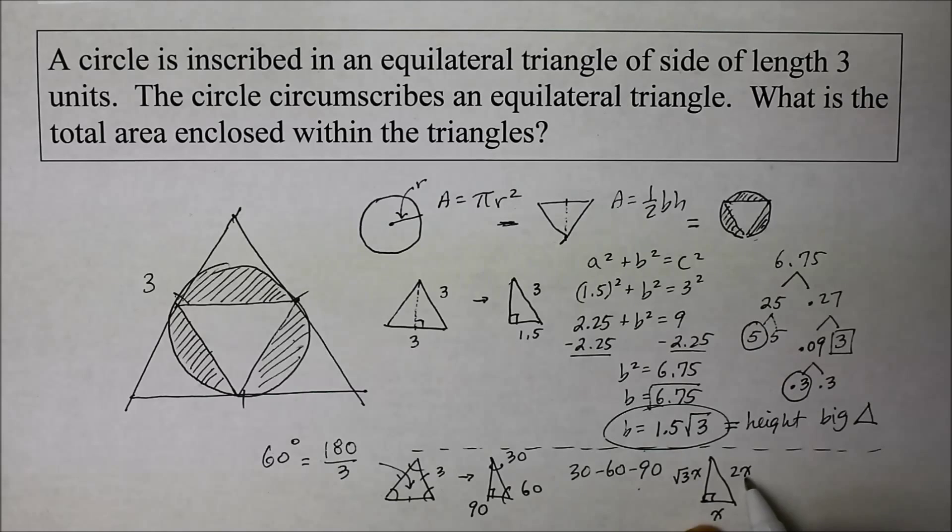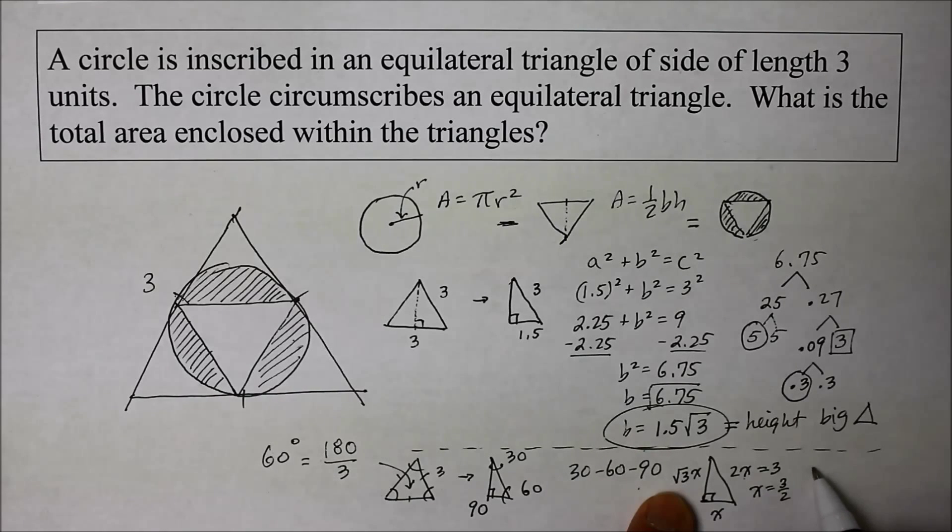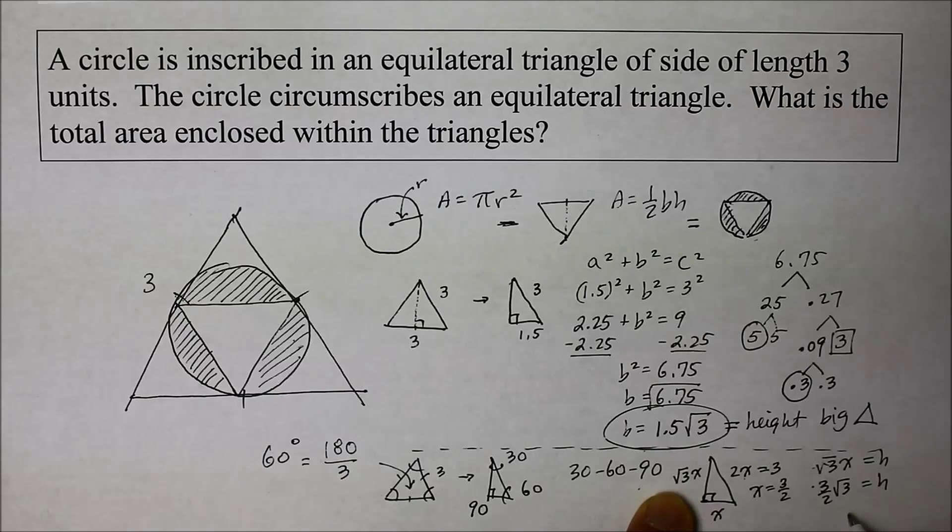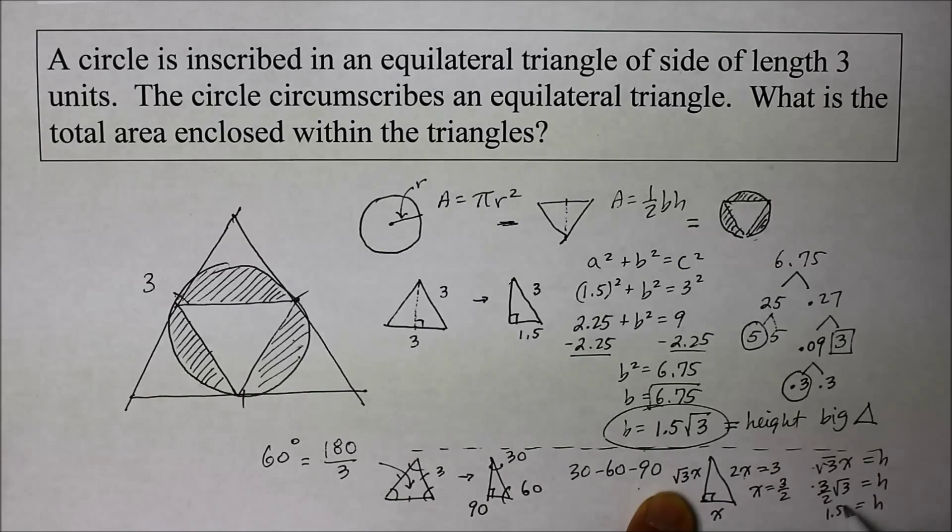So if this is 3 then x becomes 3 over 2. And to find the height you just substitute it in there. So square root of 3 x equals the height. So that's 3 over 2 square root of 3. That's the height. So height is simply 3 over 2 which is 1.5 square root of 3. So either way you get the same height.